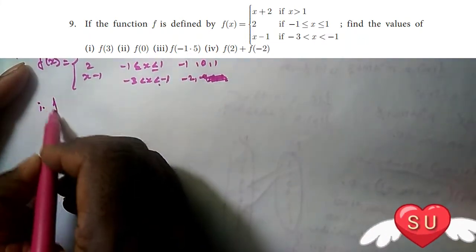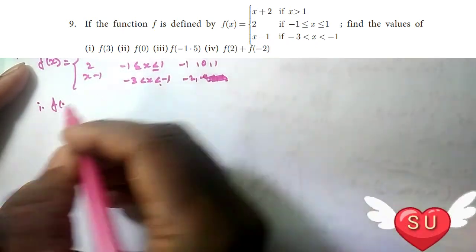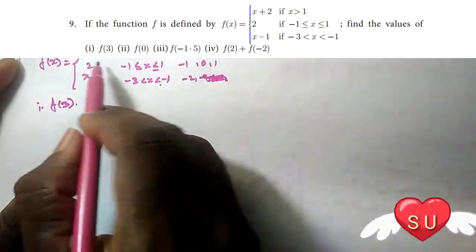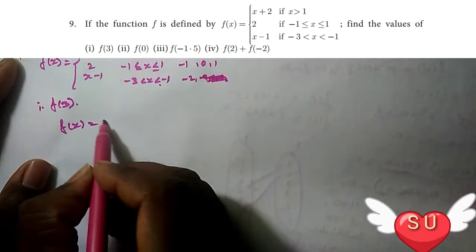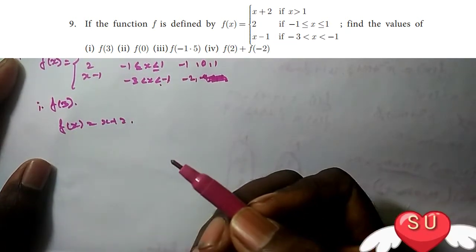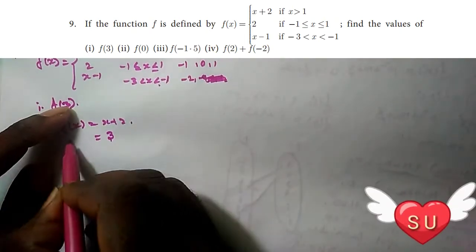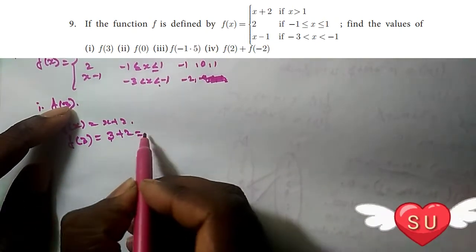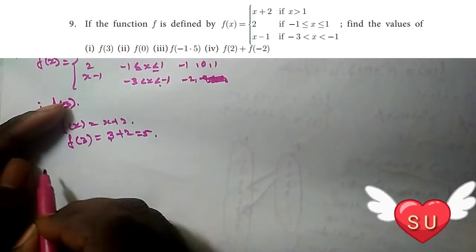First question: find f(3). So x = 3. Since 3 is greater than 1, we use f(x) = x + 2. Therefore f(3) = 3 + 2 = 5.